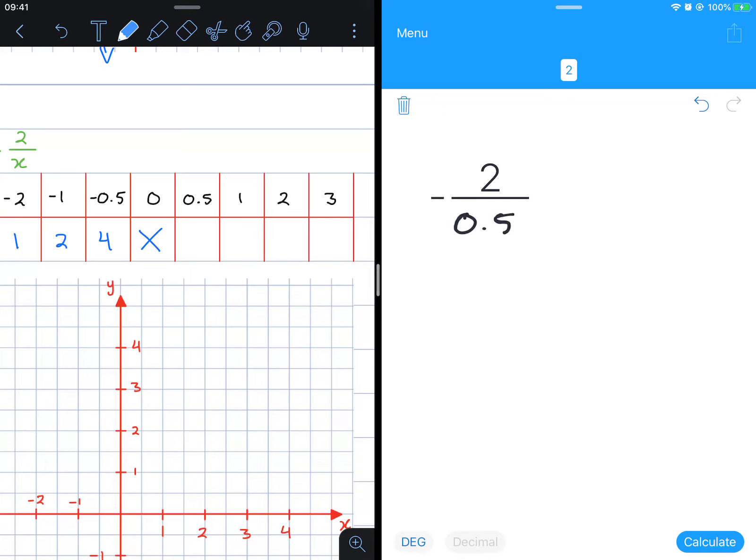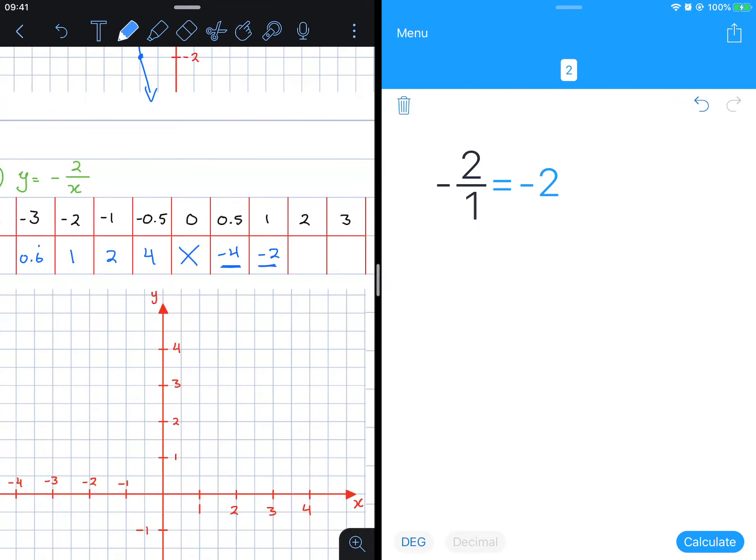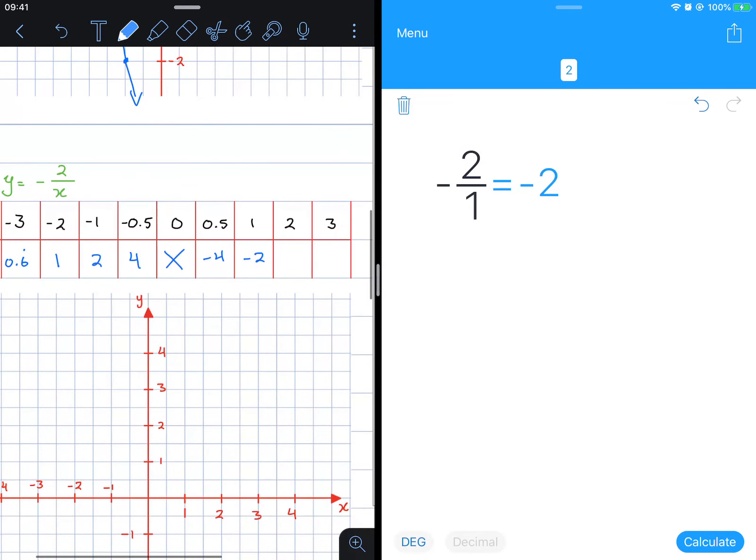Substituting 0.5 we get negative 4. Substituting 1 we get negative 2. And I'm hoping you're beginning to see the pattern here. These values are the same ones here, just negative. So we get 1 and 0.6 recurring.